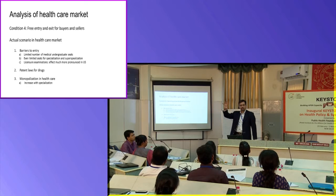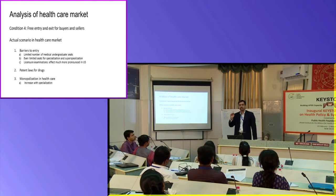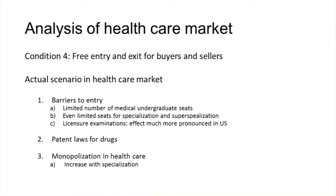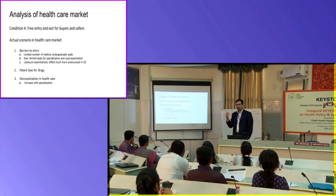As you go up the specialization ladder, those barriers to entry keep increasing. You have large numbers at the initial MBBS entry level, which goes down at specialization and even further down at super specialization. There are also patent laws for drugs — not everybody is able to manufacture the same drug once produced. Now there is just one company producing it and that company sets its own price, and this keeps increasing with specialization.